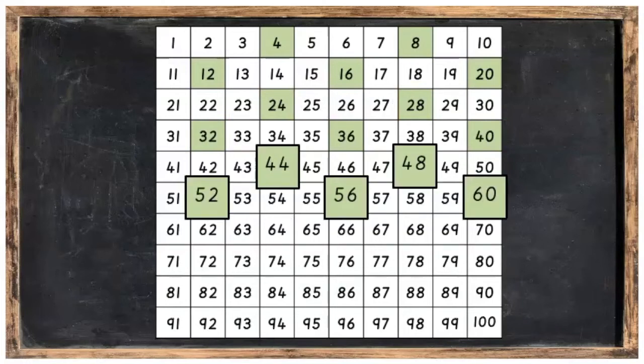And, because they'll all have a four, eight, two, six and zero in them.